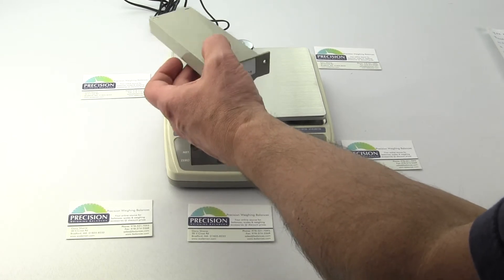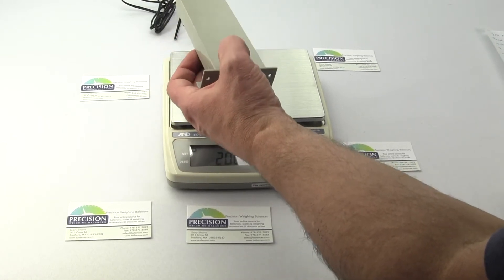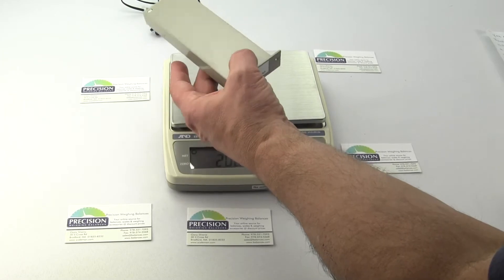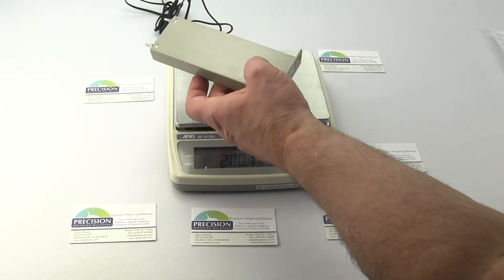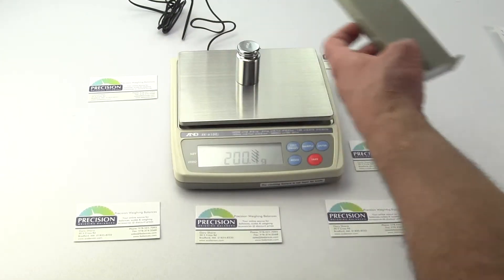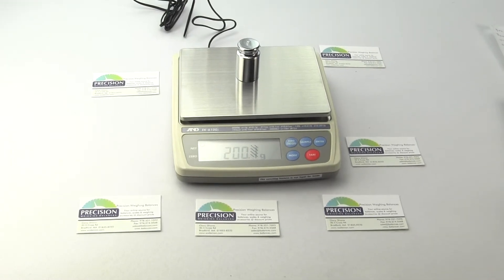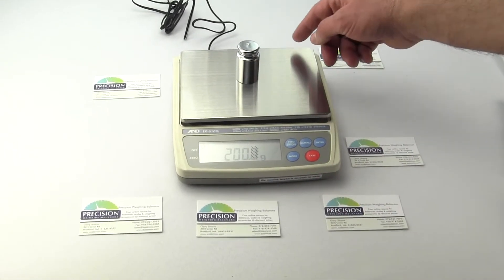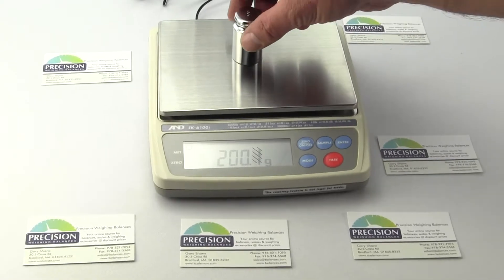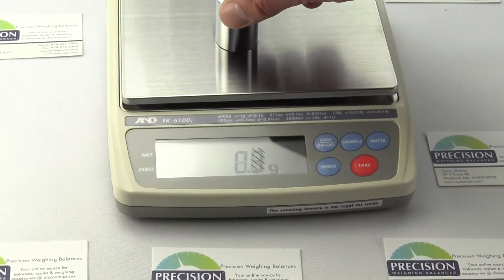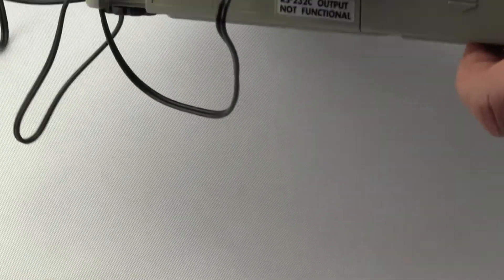Just want you to be aware the part number is an EK-W-09, it's a rechargeable battery. So you'll see here we have the EK6100J and we have the scale operating on AC adapter. On the back of the scale we have the AC adapter plugged in.